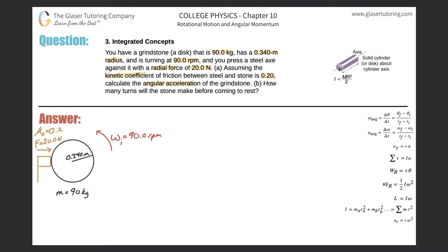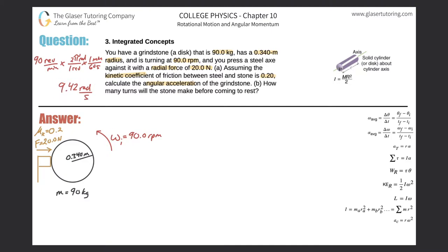First, I notice the units are in RPM — we need radians per second. So I'll convert 90 revolutions per minute: multiply by 2π radians per revolution, then divide by 60 seconds per minute. That gives 90 × 2 × π / 60, which is approximately 9.42 radians per second. This is the initial angular velocity before the steel axe is applied.